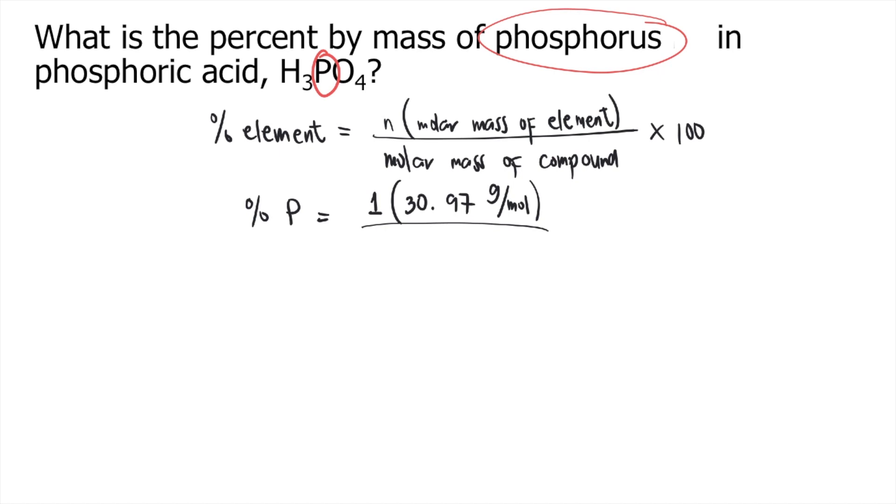Our compound is H3PO4. So it has hydrogen, phosphorus, and oxygen. The molar mass of hydrogen is 1.008 grams per mole, and there are three hydrogens in H3PO4. So 1.008 times 3, that's 3.024 grams per mole.